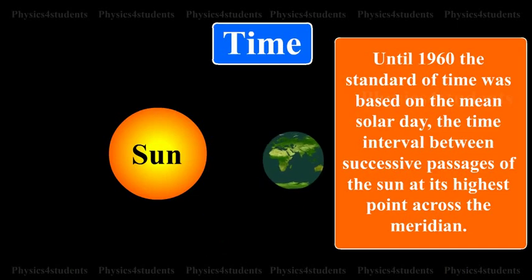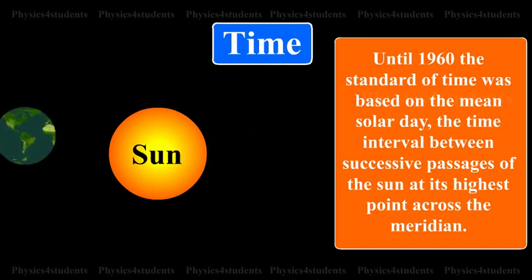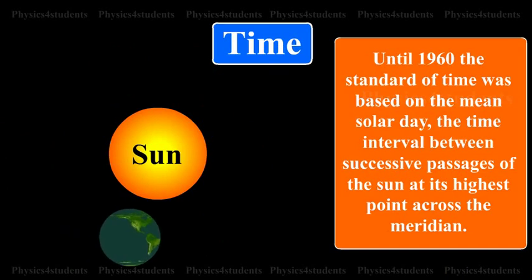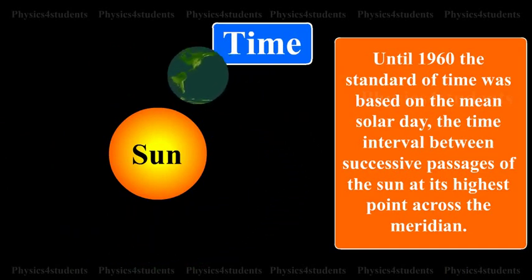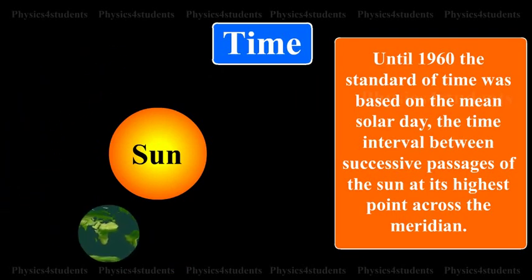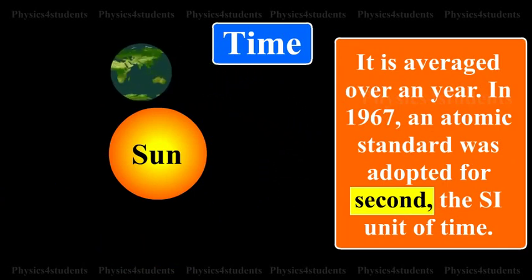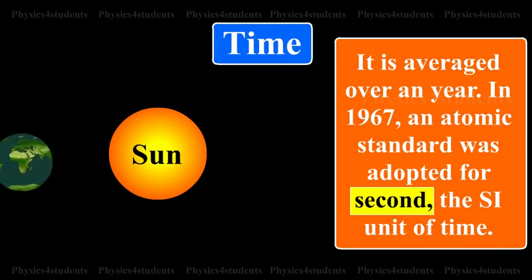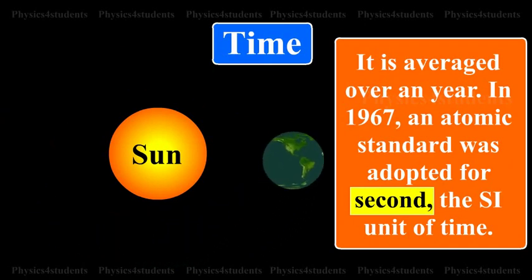Time. Until 1960, the standard of time was based on the mean solar day, the time interval between successive passages of the sun at its highest point across the meridian. It is averaged over a year. In 1967, an atomic standard was adopted for second, the SI unit of time.